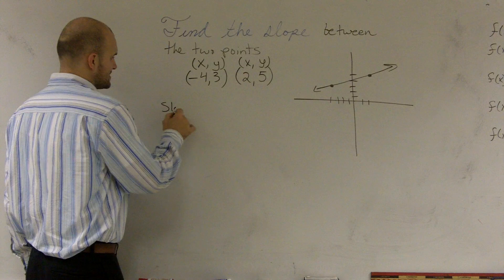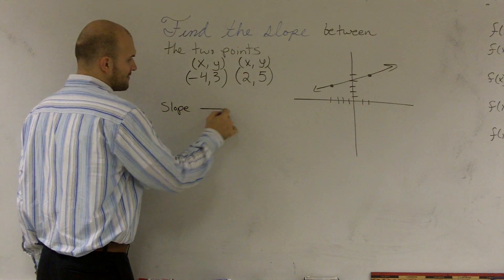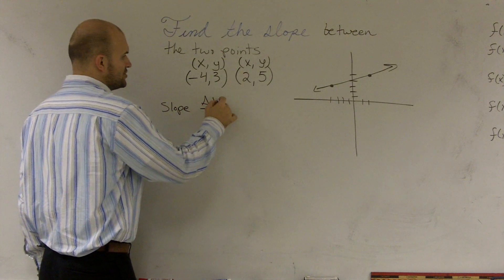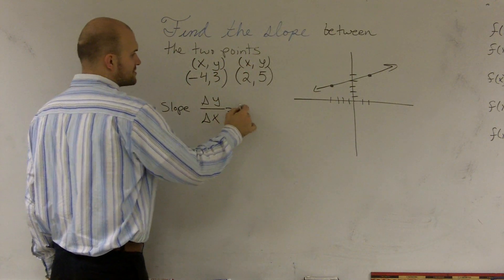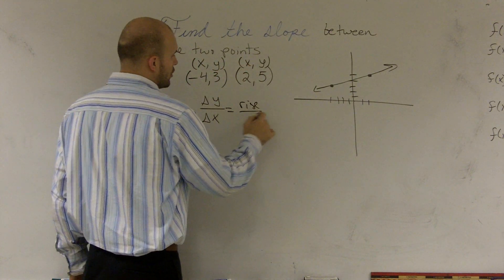Now, slope, like I said, it's a ratio. So therefore, you're going to have a fraction. And what it is is the change in your y values over the change in my x. Sometimes some people like to say rise over run.